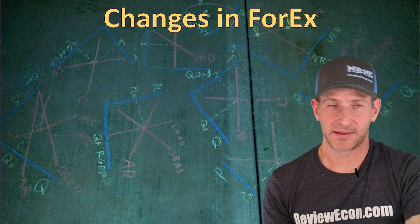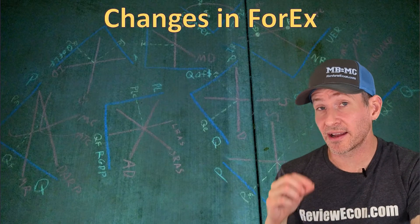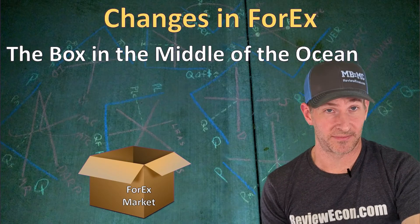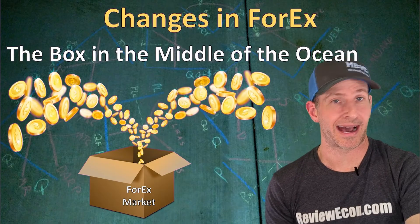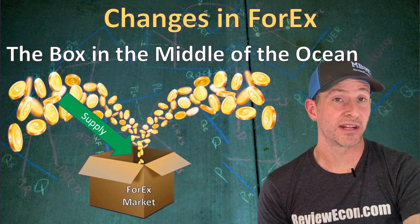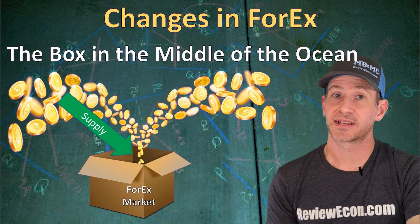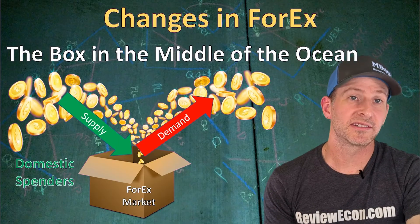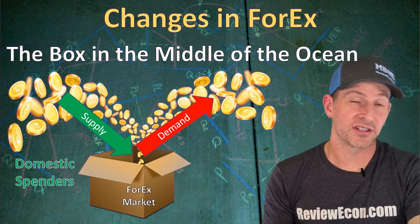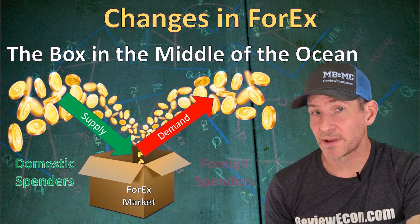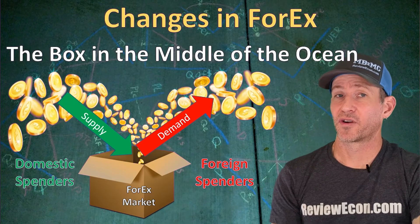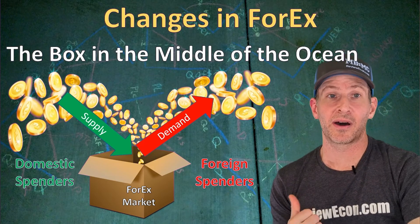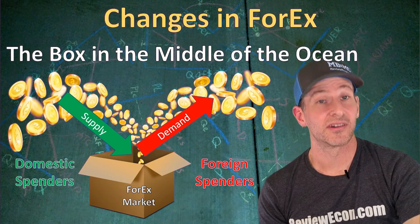When it comes to the foreign exchange market, it can be tricky — we're talking about international markets, not domestic supply and demand for currency. It's helpful to think of the foreign exchange market as a box in the middle of the ocean. Currency put into that box is the supply side; currency coming out of that box is the demand side. The supply side is predominantly domestic spenders supplying their currency as they demand foreign currency. Foreign spenders are the demanders — when they buy U.S. goods, they demand our currency while supplying theirs.